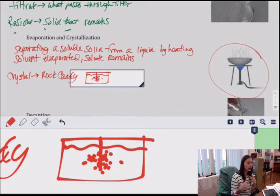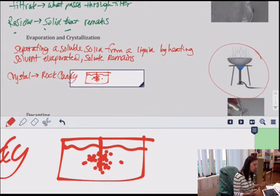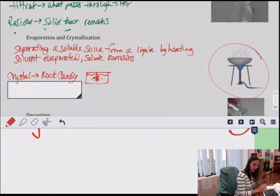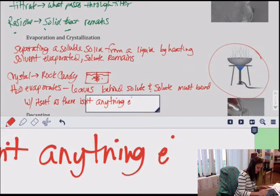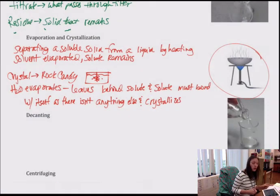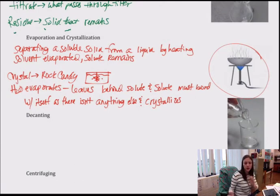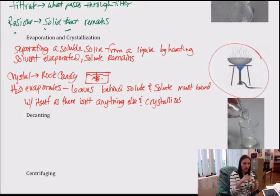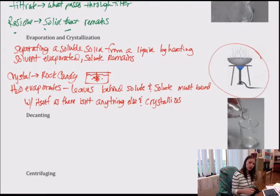Crystallization is kind of like a longer version of evaporation because you're not using heat or high heat — you're just waiting for the material to evaporate slowly. The fact that particles have to bond with themselves means they're forming more and more bonds, which creates the crystal you can see. You have to have lots of bonds put together to actually make a visible crystal. Evaporation and crystallization are very similar — one is just a faster version of the other.